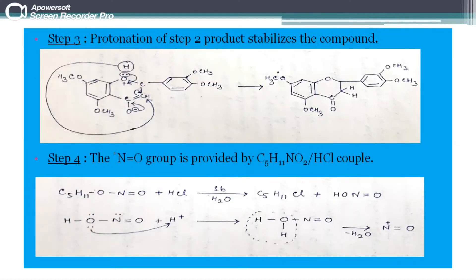5,7-3-O-tetra-methoxyflamonone is obtained in step 3.